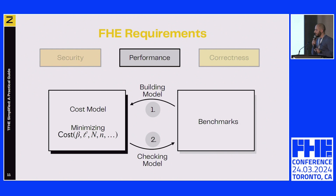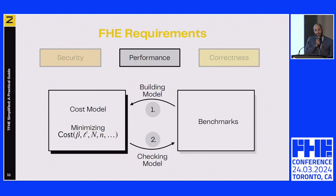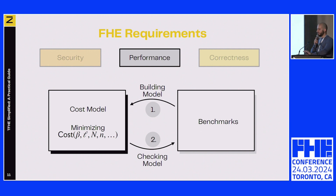For performance, we apply a similar method. We want a cost model to predict the cost of operations like bootstrapping. We launch benchmarks with different parameter sets—setting aside correctness temporarily—to build a model showing the impact of different parameters on performance. This cost model uses the complexities of all operations plus benchmark values, and we try to minimize this cost. We then verify that our model matches reality by relaunching benchmarks and checking whether predictions fit.